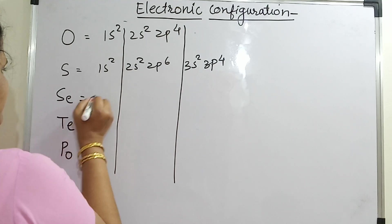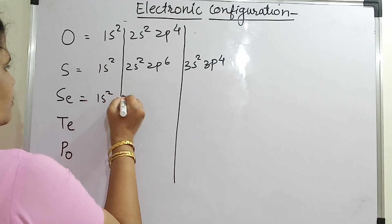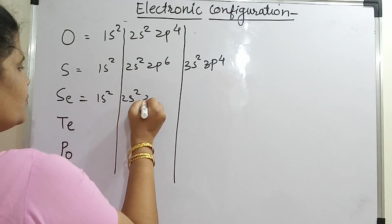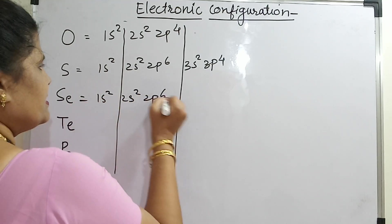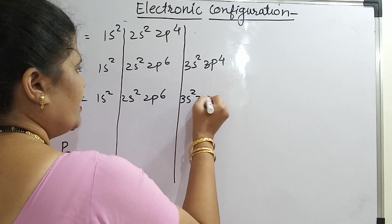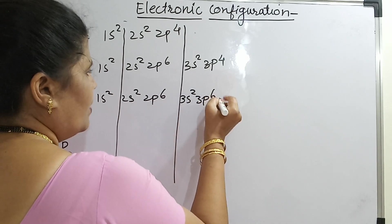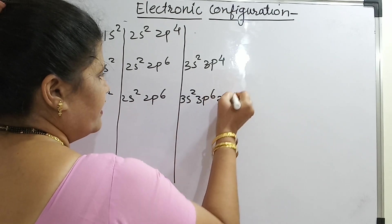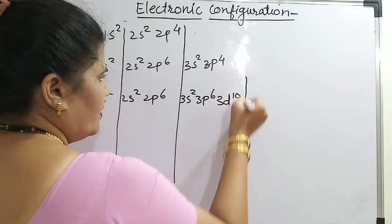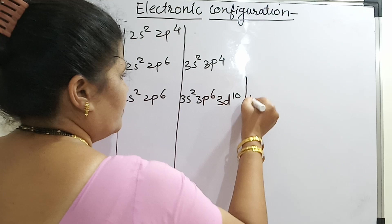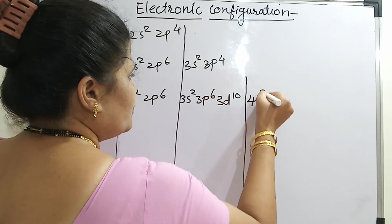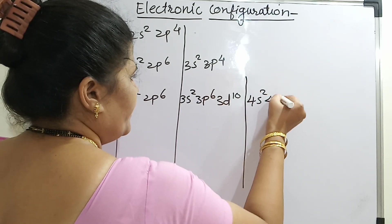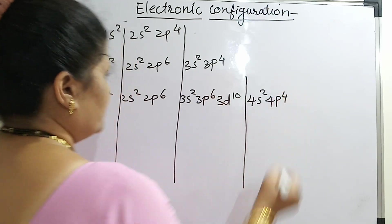For selenium: 1s2, 2s2, 2p6, 3s2, 3p6. What will be here now? 3d10. Then 4s2 and 4p4.